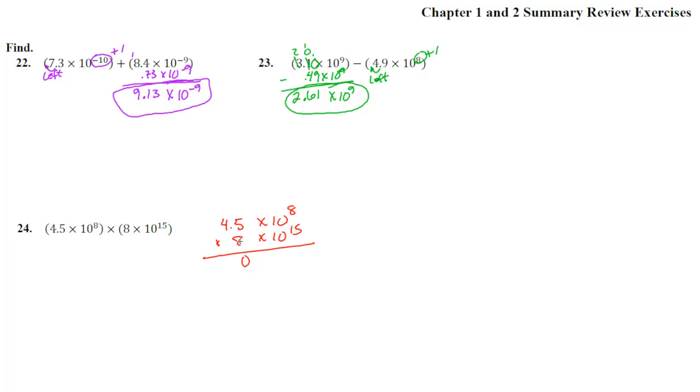8 times 5 is 40. Carry the 4. 8 times 4 is 32, plus 4 is 36. One decimal place. So it's 36.0 times 10 to the 23rd power.